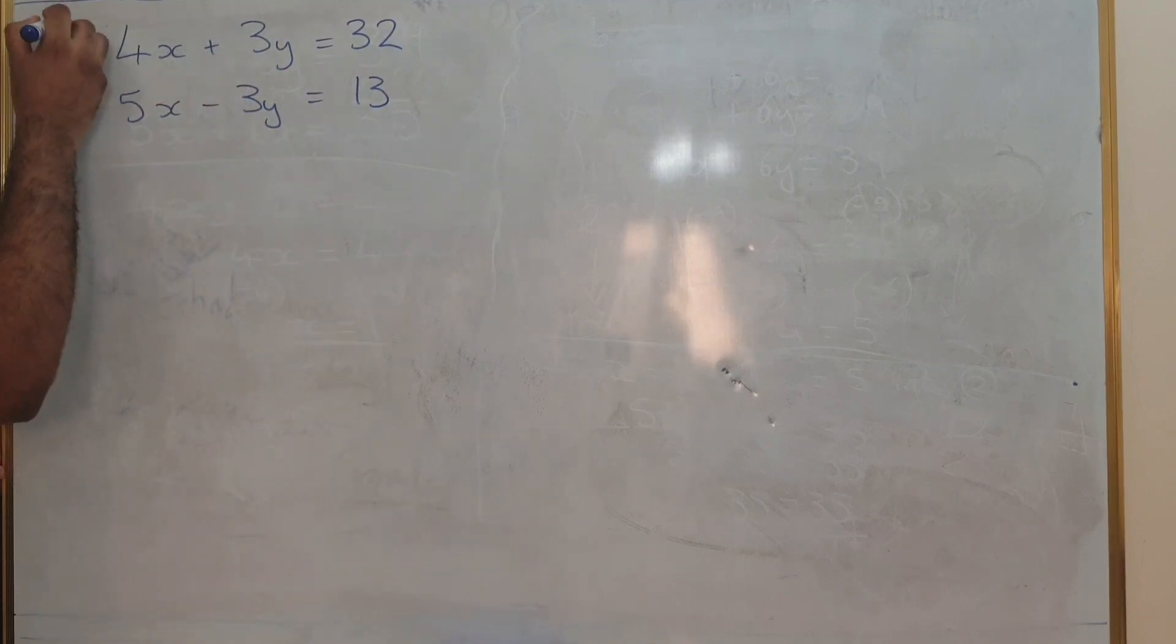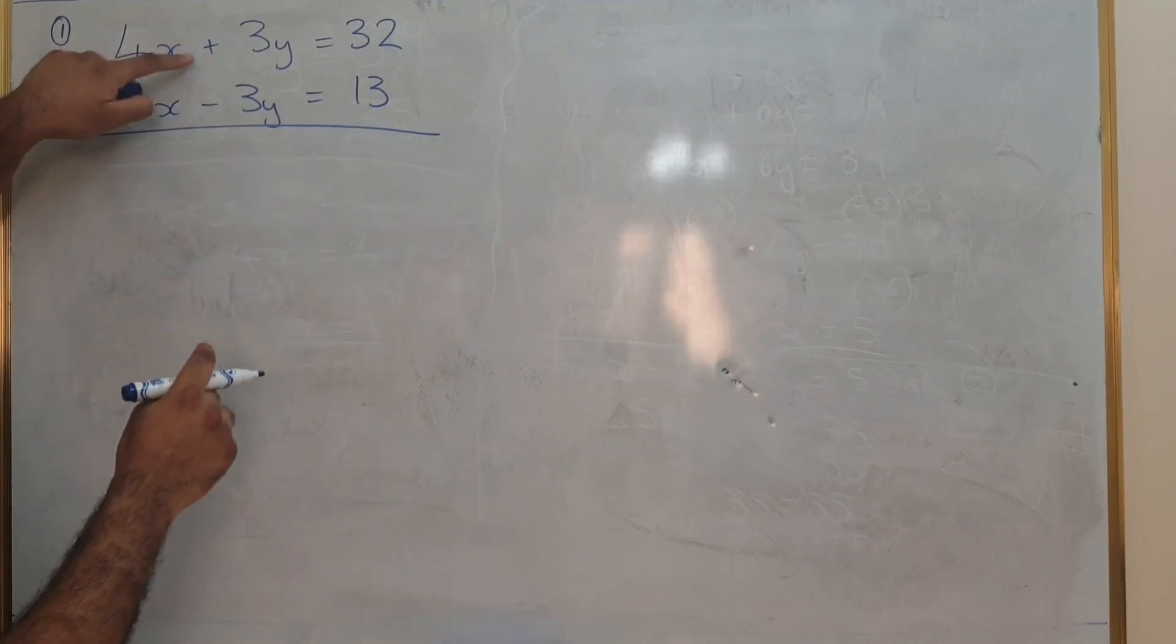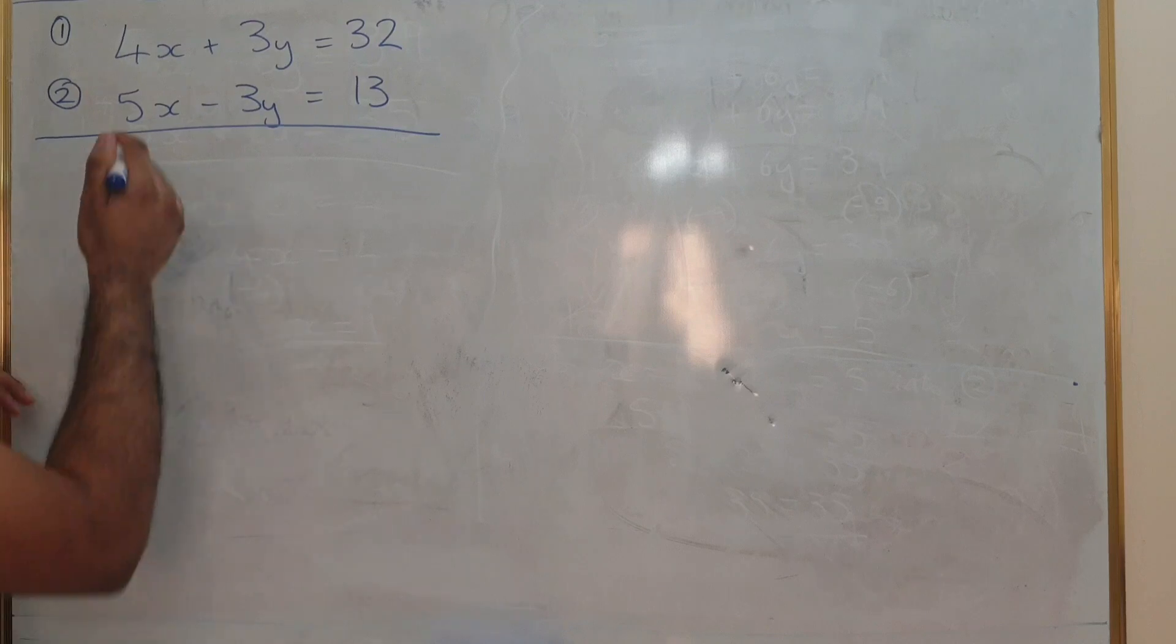The first thing I'm going to label the equations, this is 1 and this is 2. I'm going to have different sides, you're going to add them both together.